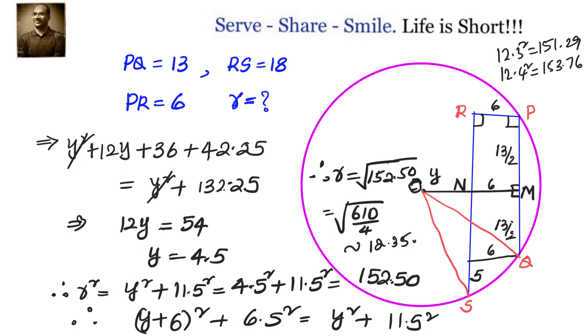If you take the unknown value, that is ON as Y variable, then we have two right angle triangles ready for us. One gives us (Y + 6)² + 6.5² = R². The other one gives us Y² + 11.5² = R². Equate these two and get your Y as 4.5. Once you got Y equals 4.5, you can go back and substitute in any one of the equations, and you will get that R equals square root of 610 divided by 4, or square root of 152.50, approximately equals to 12.34 or 12.35.